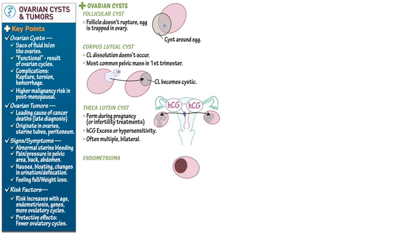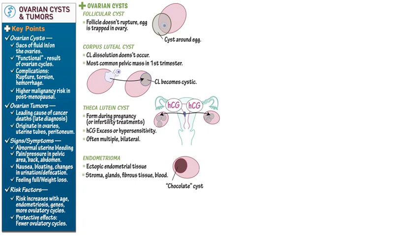Endometriomas comprise estrogen-dependent ectopic endometrial stroma, glands, fibrous tissue, and blood. The dark, tarry blood gives them a dark brownish color that lends them the nickname "chocolate cysts." Endometriomas can also be found elsewhere in the body and require yearly follow-ups.